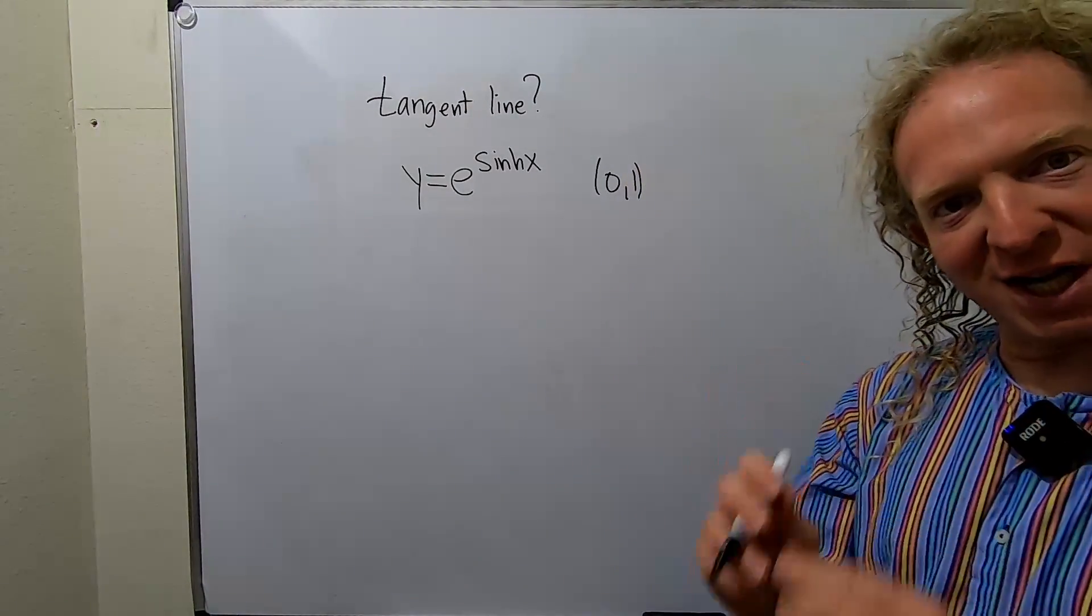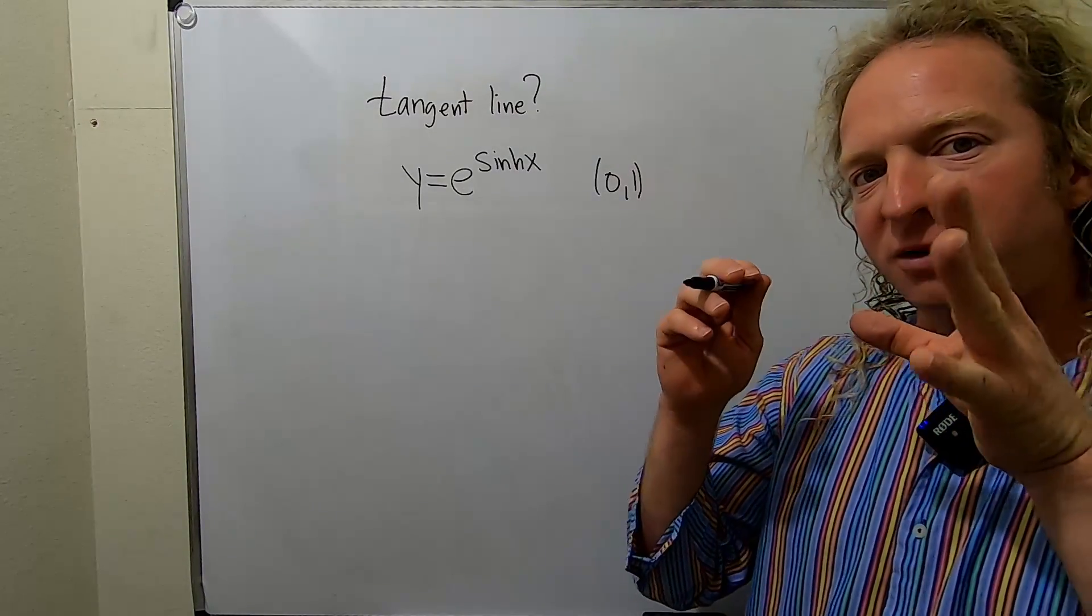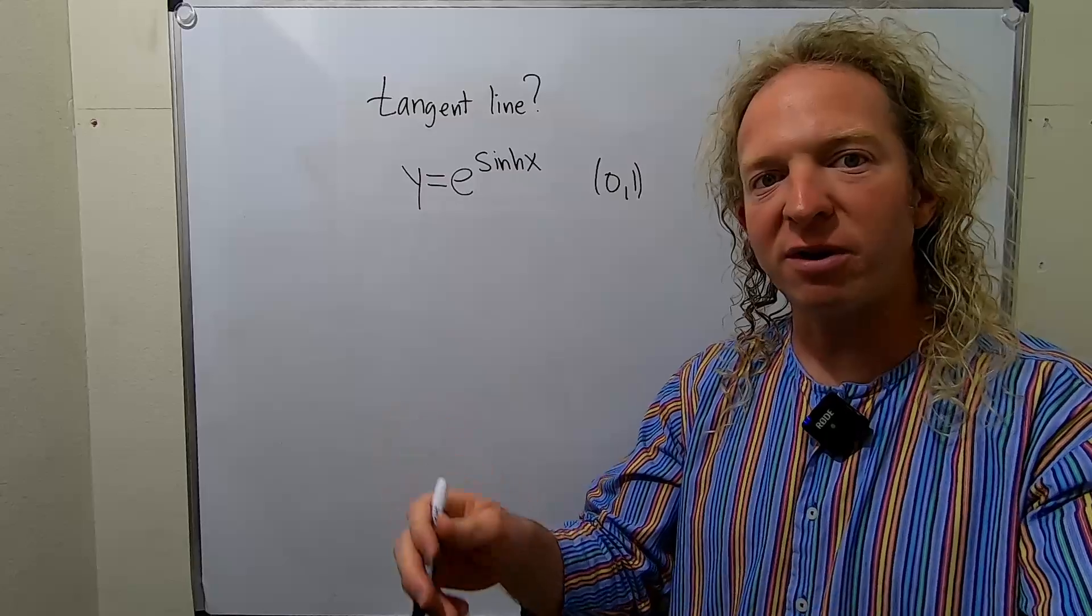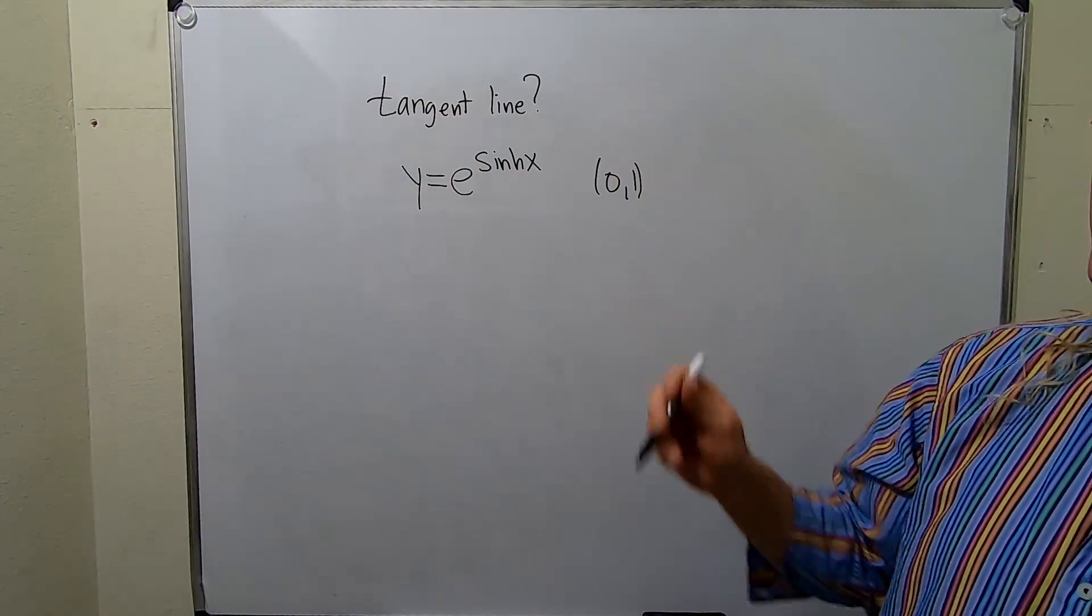The slope of the tangent line is the derivative of the function. So all we have to do is find the derivative, plug in the number, and then figure out the line. We'll start by finding the derivative of this function.